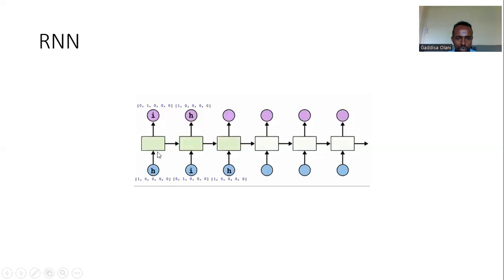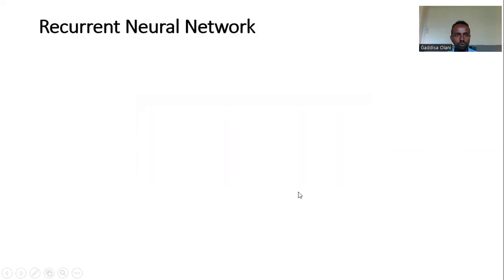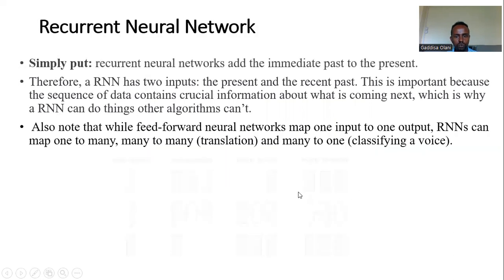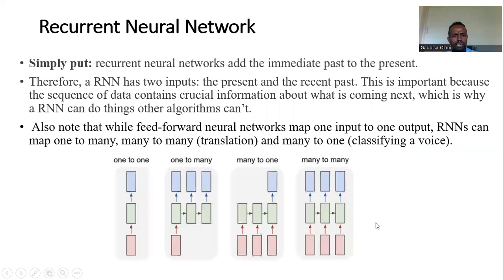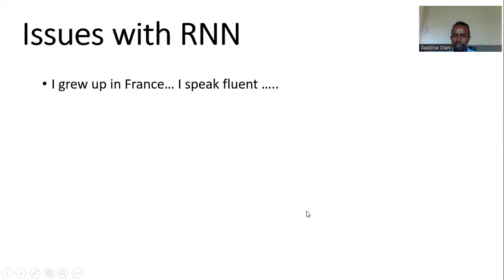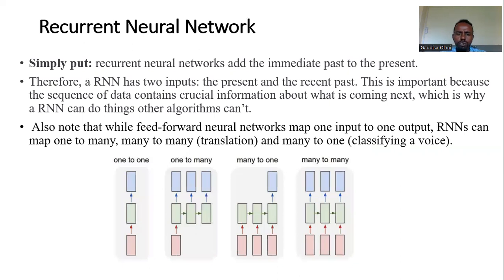This is the typical structure of a recurrent neural network — one to one, with an input and an output, and many inputs to many outputs. The structure depends on the problem you are solving.